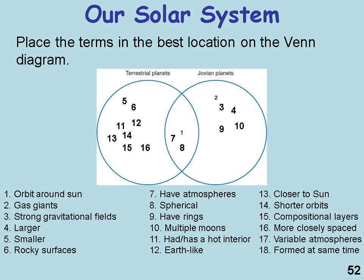Terrestrial planets are closer to the sun, have shorter orbits, compositional layers, and more closely spaced revolutions around the sun. Their atmospheres vary — for example, Mars's atmosphere is very different from Venus's and Earth's. They all formed about the same time as debris was consolidated through gravitational attraction around the sun.